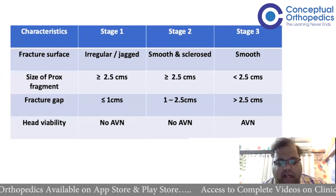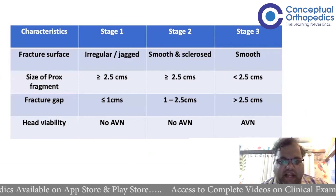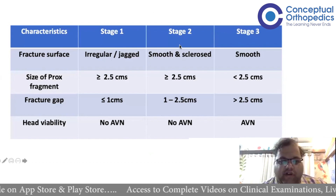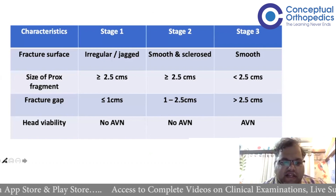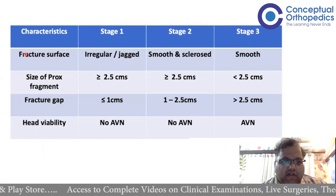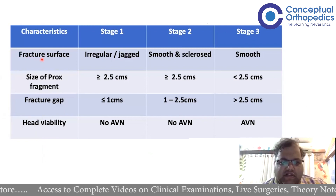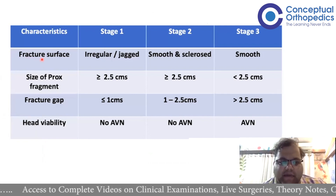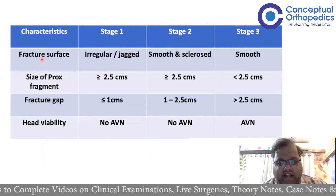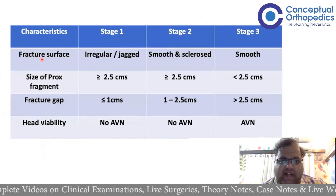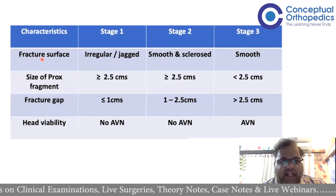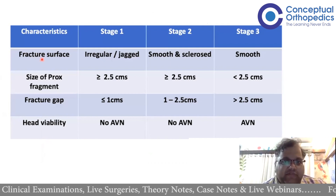How do we classify? You need to replicate this particular table in your exams. It's a very easy table — you have to understand that four things are considered: fracture surface, how much is the gap, what is the size of the proximal fragment (the head and neck portion), and what is the head viability. Head viability is assessed not by X-ray but by MRI. Even in this 2005 paper, they used MRI in most patients who could get it done.